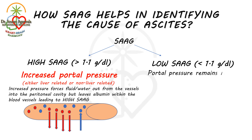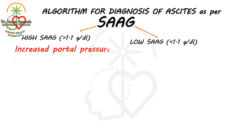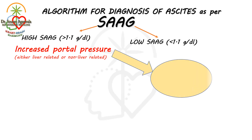In the case of low SAAG, the portal pressure remains normal. Here is the algorithm for diagnosis of ascites as per SAAG. High SAAG is a value of more than 1.1 gram per deciliter and low SAAG is a value of less than 1.1 gram per deciliter. High SAAG is almost always due to increased portal pressure, and it may be liver-related or non-liver-related, with 97% accurate predictability.